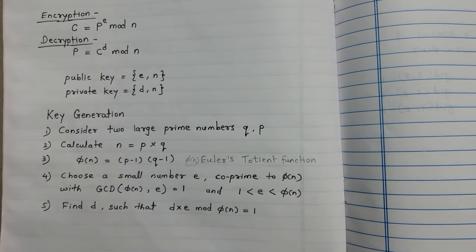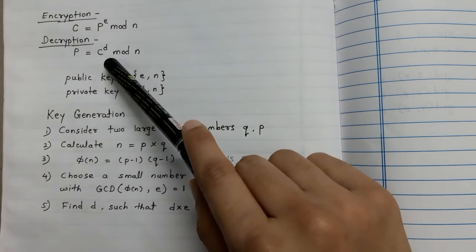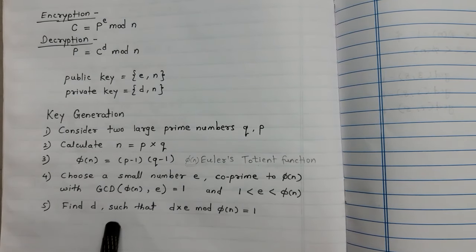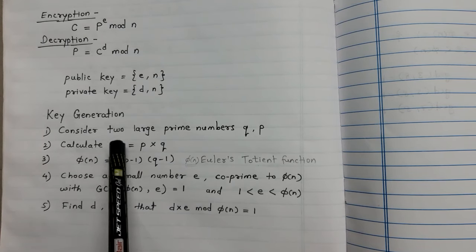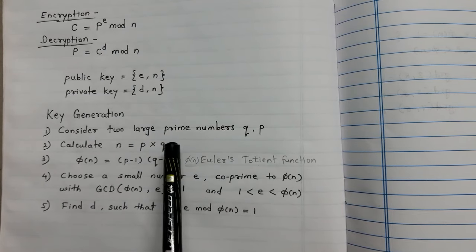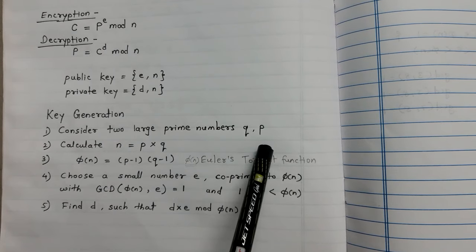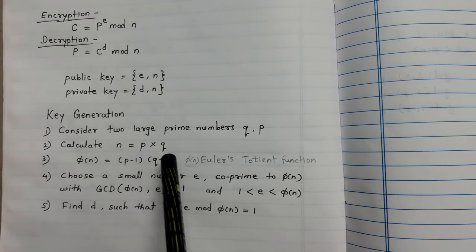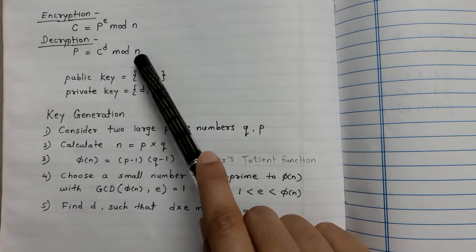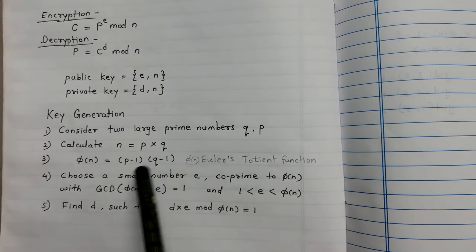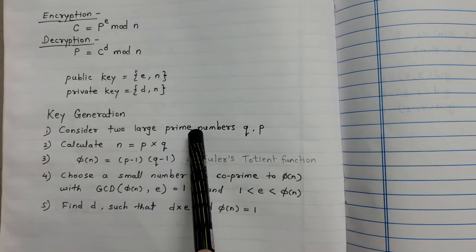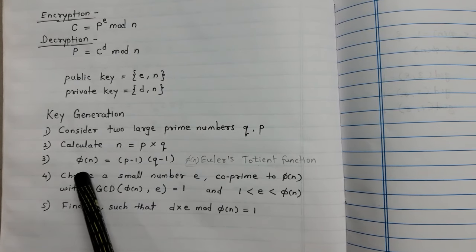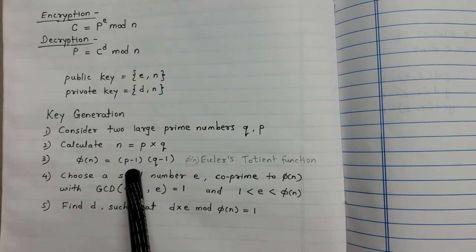We need to calculate the public key E, the private key D, and the value of N. Now let us see the key generation steps. The first step is to consider two large prime numbers P and Q. The next step is to calculate N = P × Q.